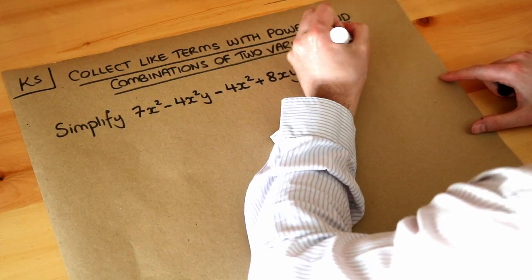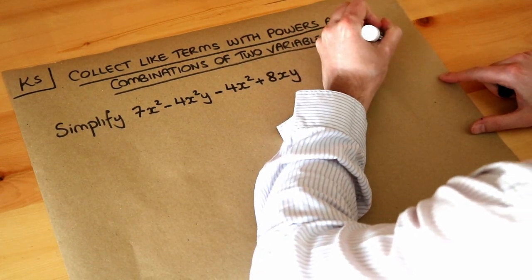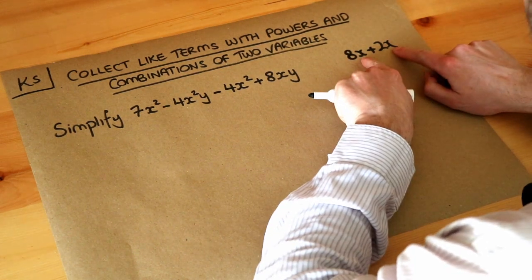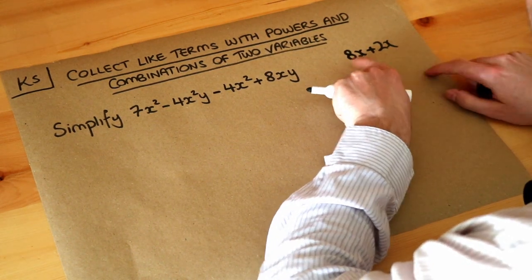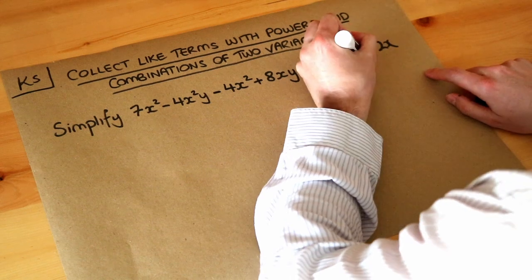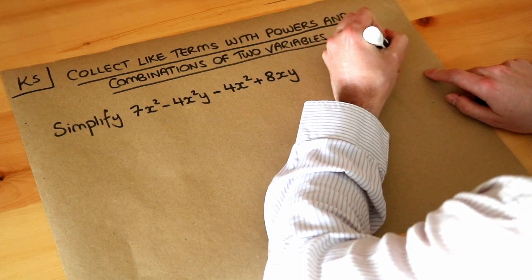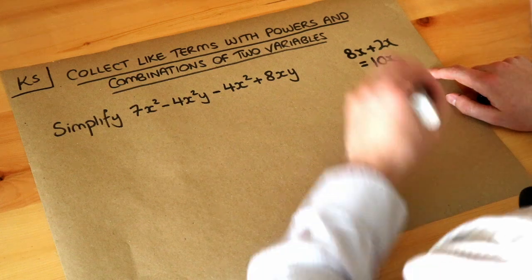For example if I had 8x plus 2x, these are like terms because they both involve an x, so we've got 8 lots of x plus 2 lots of x, then that simplifies to 10 lots of x. So that's what it means to collect like terms.